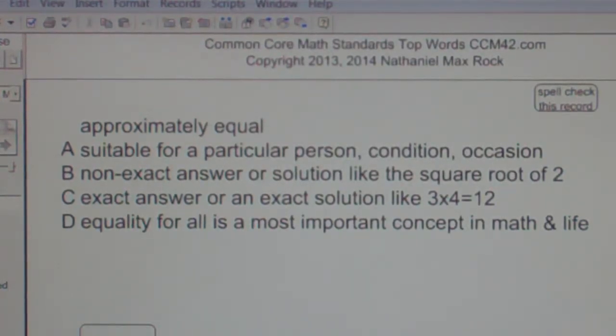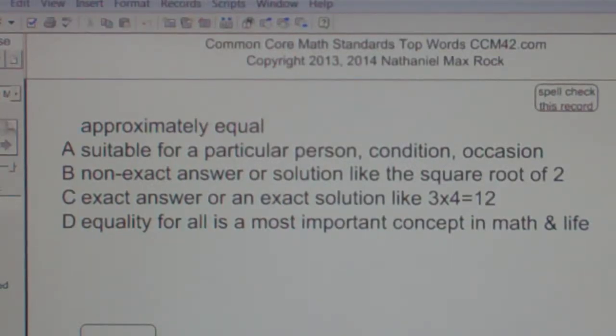C. Exact answer or an exact solution like 3 times 4 equals 12. D. Equality for all is a most important concept in math and life.